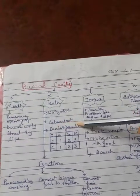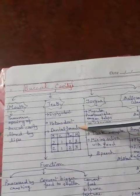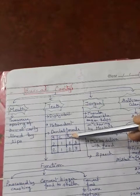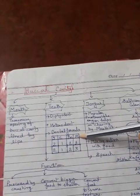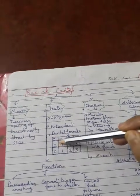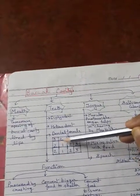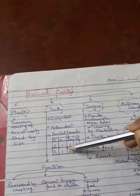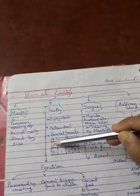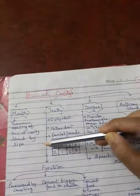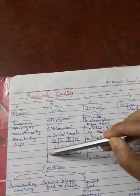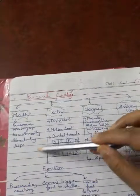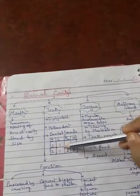This is the dental formula of an adult human being: incisors, canines, premolars, molars. For one-fourth of the mouth the count is 2, 1, 2, 3. Adding all four quadrants of the jaw together, the total comes to 32 teeth in an adult human being.